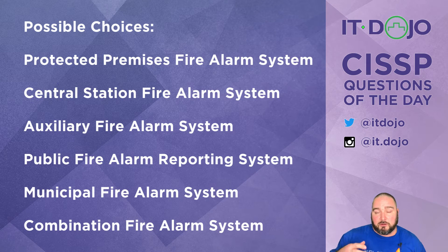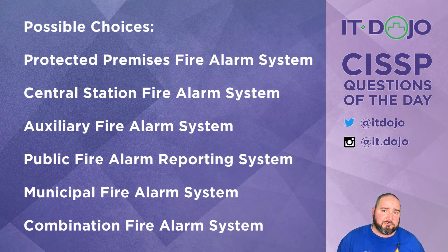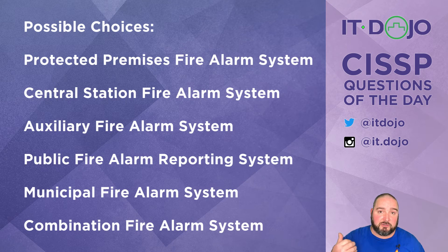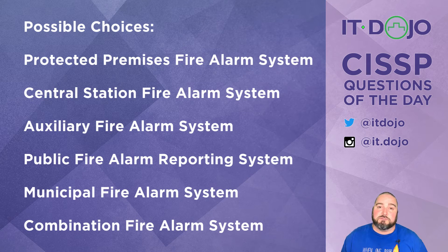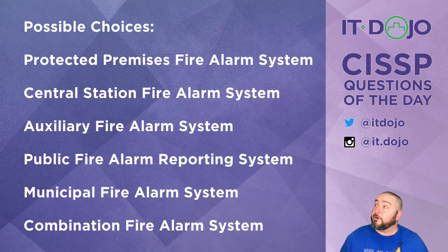Second choice is a central station fire alarm system. That's when you have an alarm system at your facility and when the alarm goes off it notifies somebody doing 24/7 monitoring — think ADT, the alarm monitoring company many people use in homes and small businesses. A central station system has local alarms that go off, but it notifies a monitoring company who then makes the determination whether police or fire need to be contacted. That's not what we're looking for here — we need something that notifies the local fire department directly, not a central monitoring station.